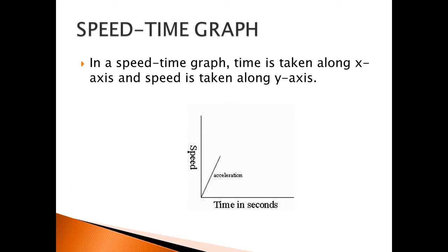Now, the speed-time graph. In a speed-time graph, time is taken along the x-axis and speed is taken along the y-axis. Similarly, in the distance-time graph, distance is taken along the y-axis and time is taken along the x-axis.